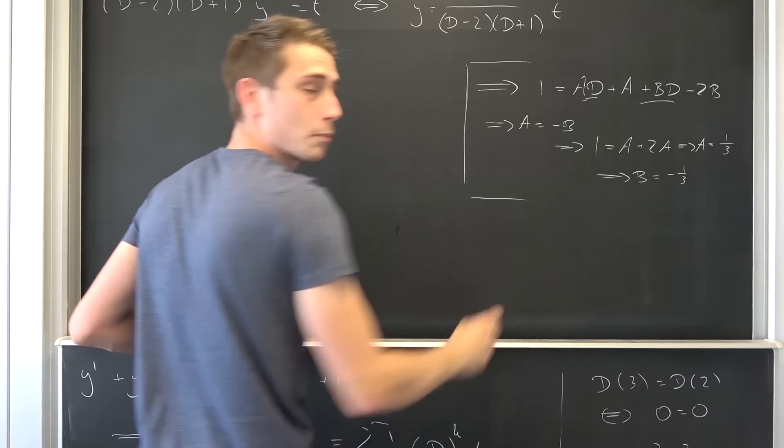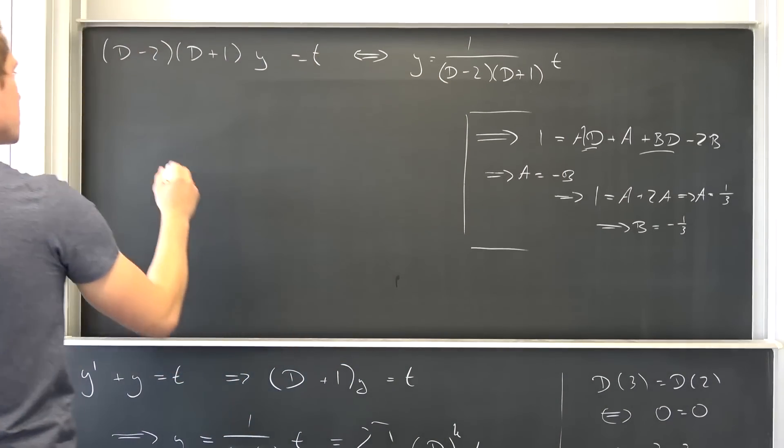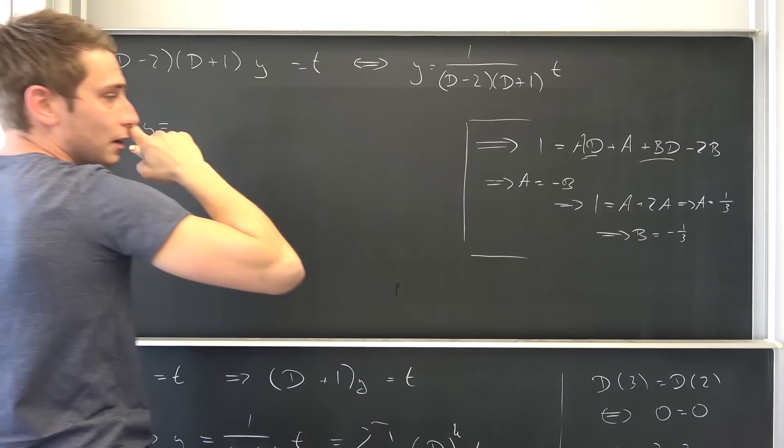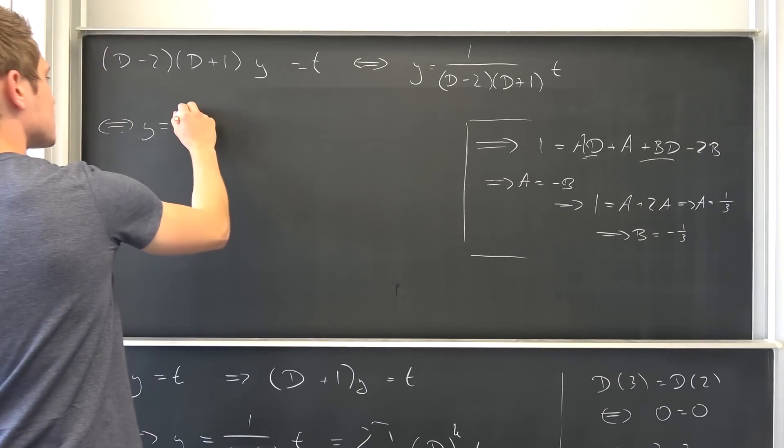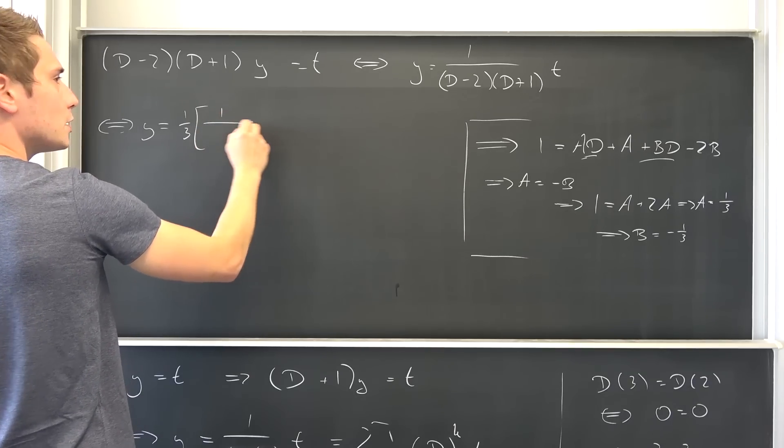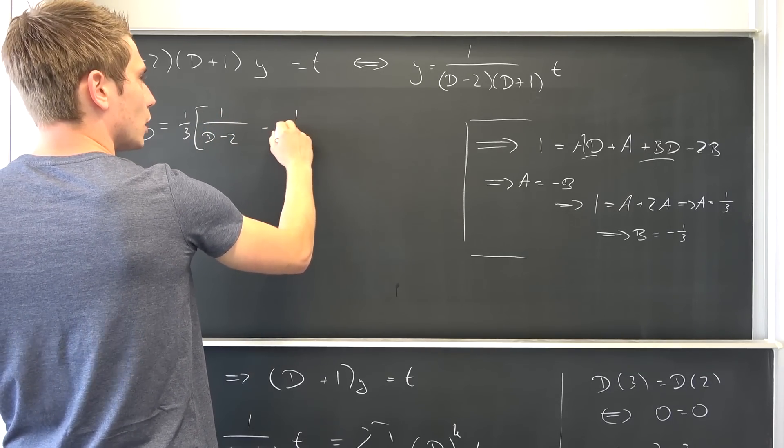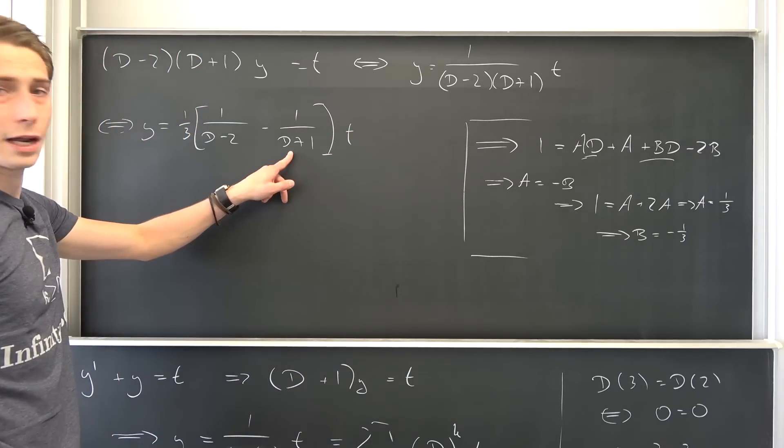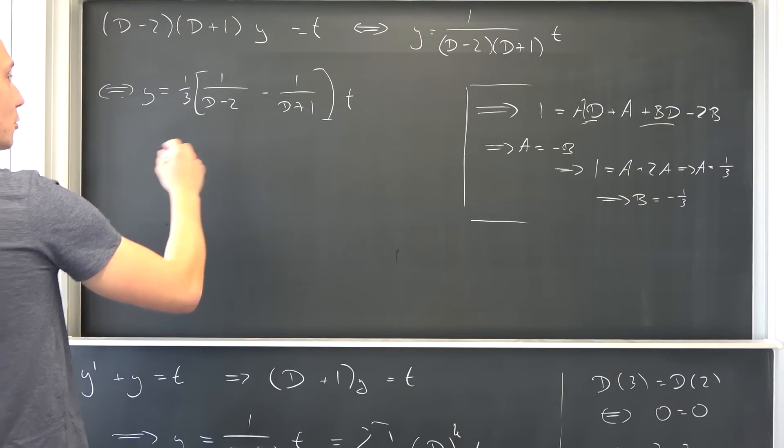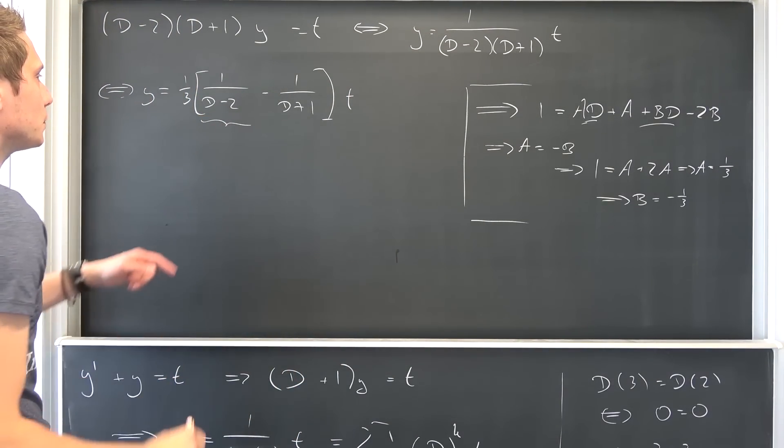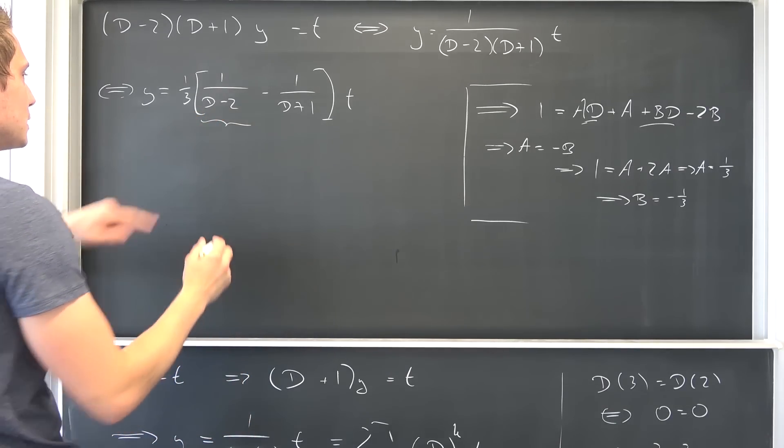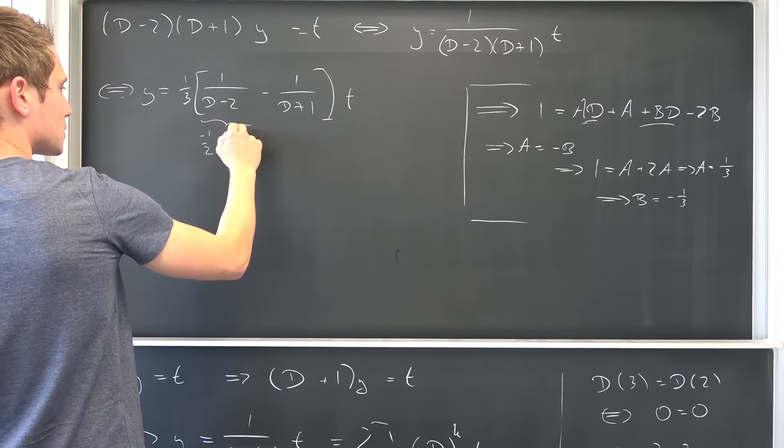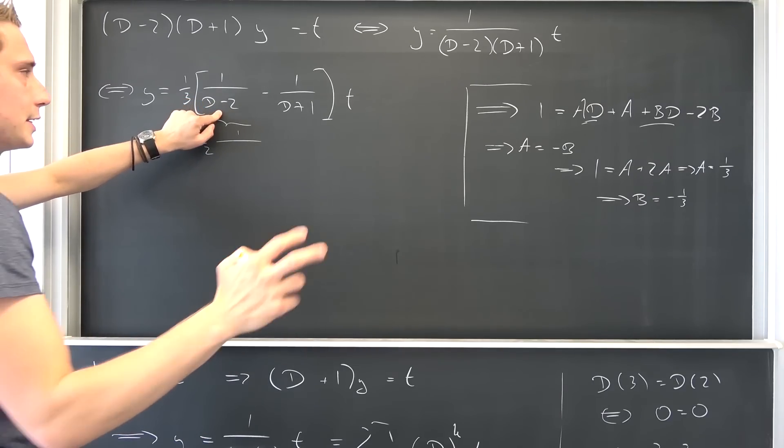And well after doing partial fraction decomposition, we can actually go ahead and get started with this chunk right here, meaning if we plug everything in, y does nothing but we have this factor of one third on all parts. So we are going to have one third times 1 over (D - 2) minus 1 over (D + 1) times t. And now we can turn this into the formal Taylor series expansion.